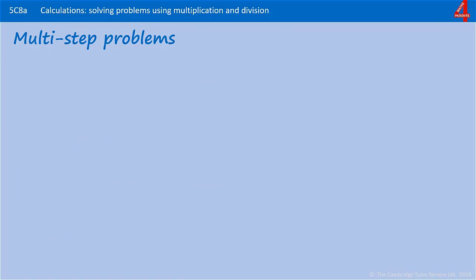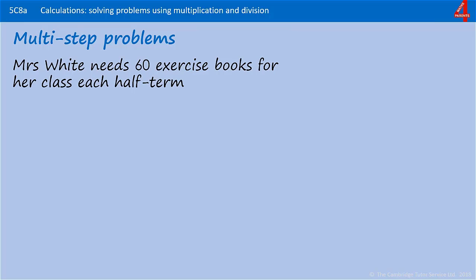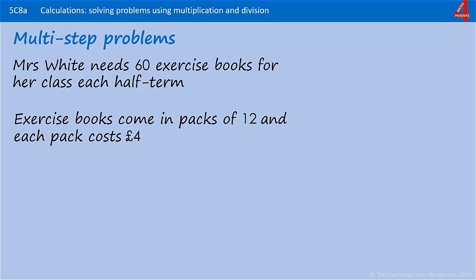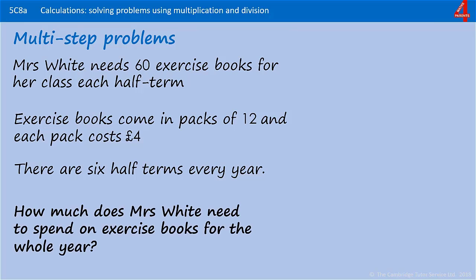Here's a similar one for you to try. Mrs White needs 60 exercise books for her class each half term. Exercise books come in packs of 12 and each pack costs four pounds. There are six half terms in every year. How much does Mrs White need to spend on exercise books for the whole year? The question is asking us how much Mrs White has to spend in a whole year — not how many exercise books — but we need to find how many to be able to answer how much she spends. Pause the video and have a go.